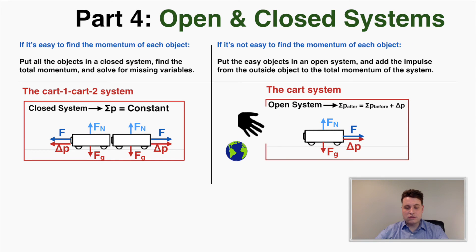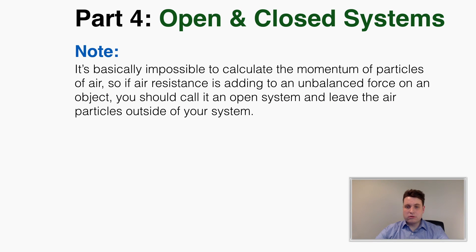Here's a general problem-solving guide: if it's easy to find the momentum of each object putting a net force on the other objects, put all objects in a closed system and find the total momentum. If it's not easy to find the total momentum of each object putting a net force on others, put the easy-to-find objects in an open system and add the impulse from the outside object to the total momentum of the system. Also, since it's basically impossible to calculate the momentum of air particles, if air resistance is adding an unbalanced force on an object, you should call it an open system and leave the air particles outside.